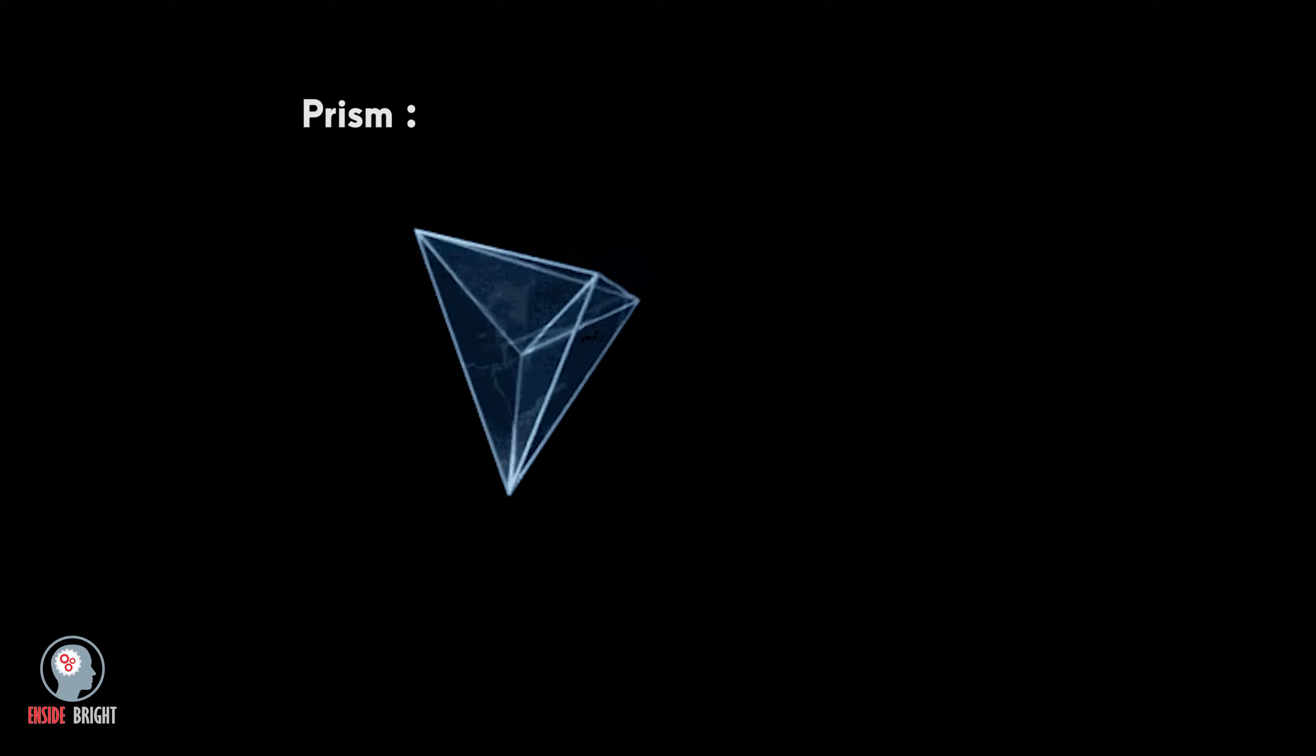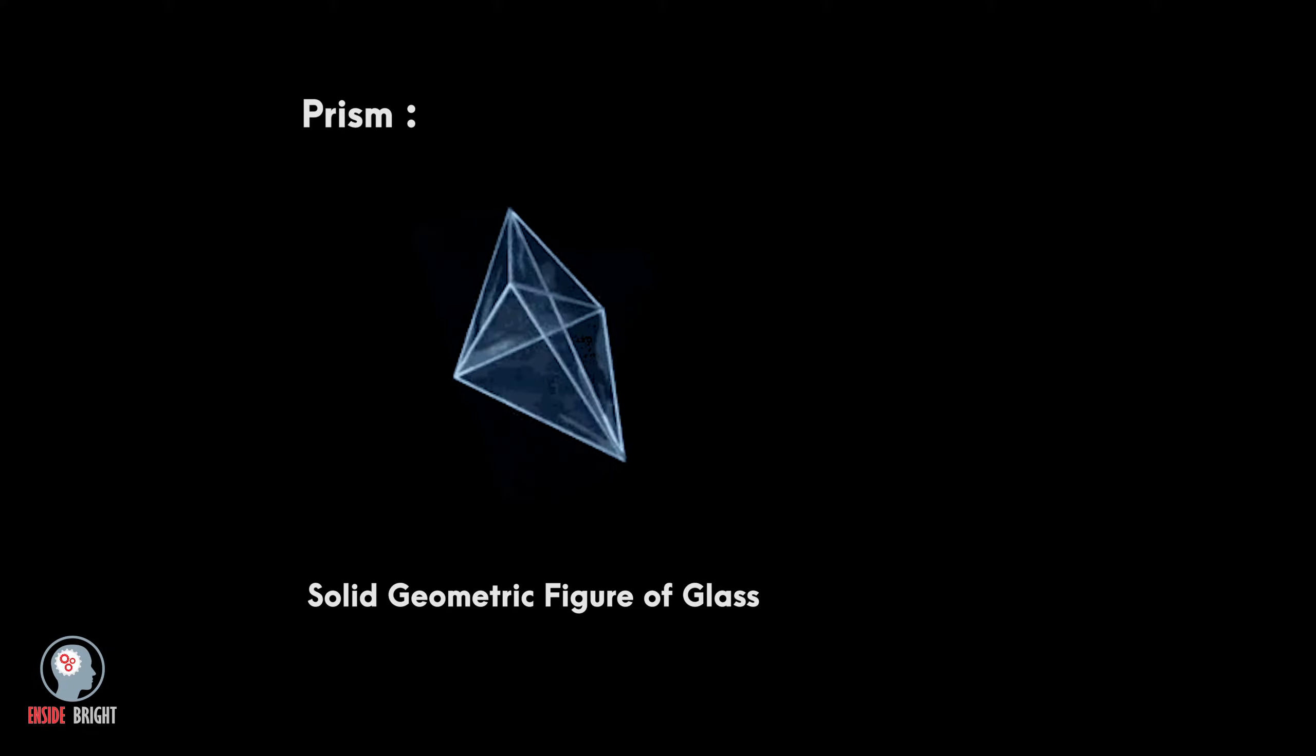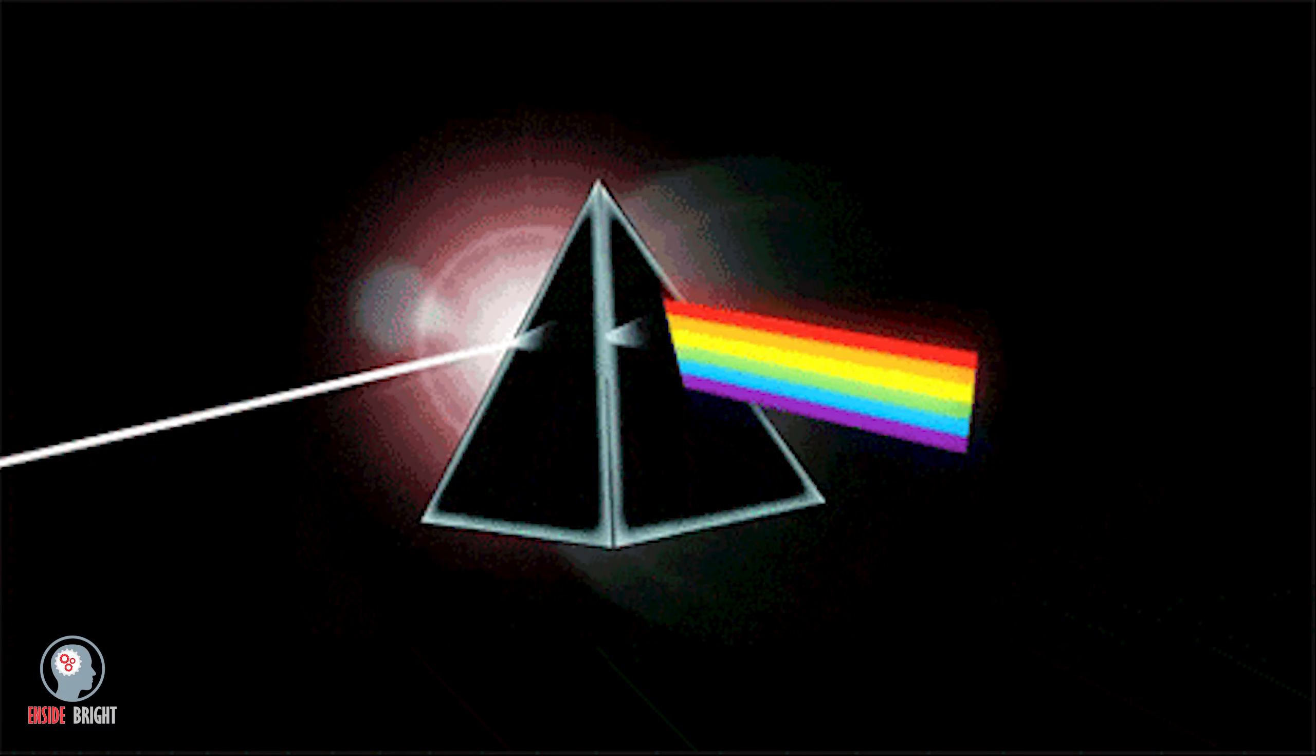You have seen a prism. A prism is a solid geometric figure whose two ends are similar, equal, and parallel. When light passes through the prism, it divides into red, orange, yellow, green, blue, indigo, and violet colors.